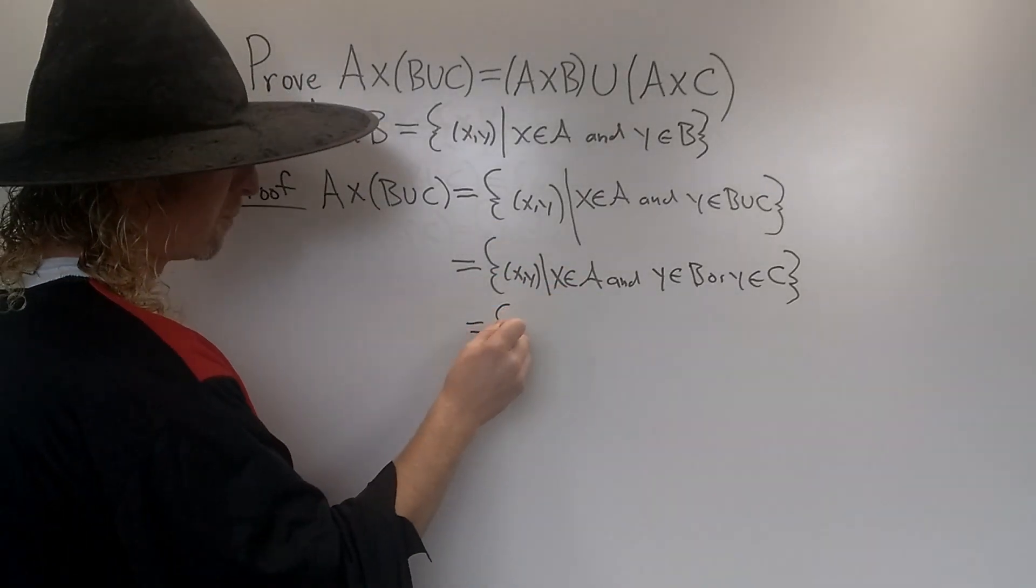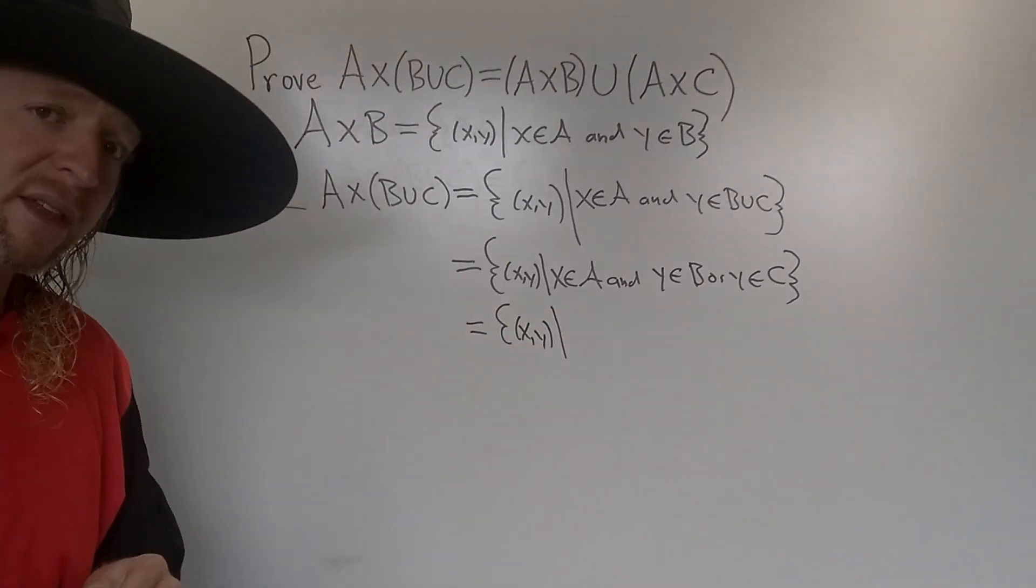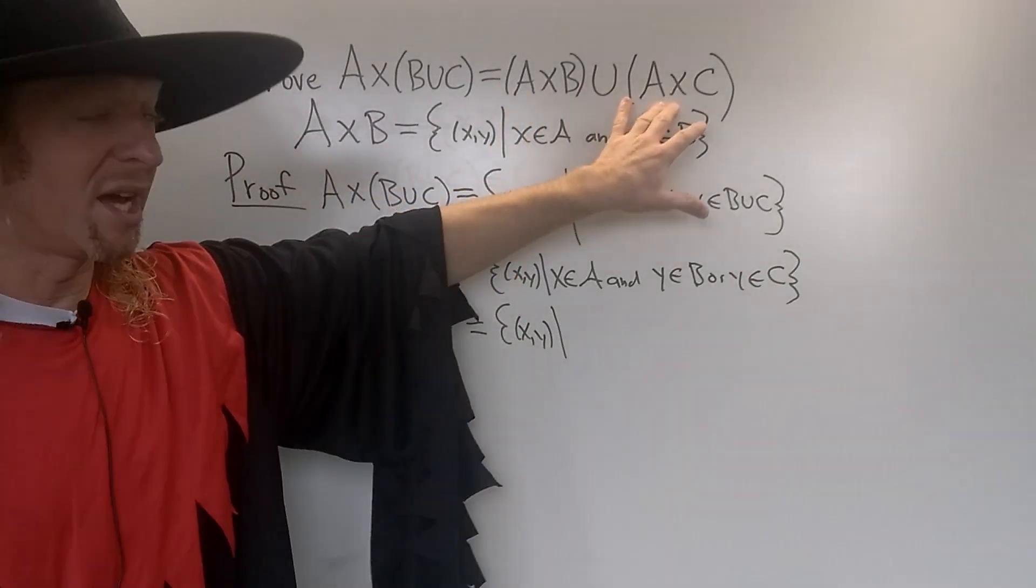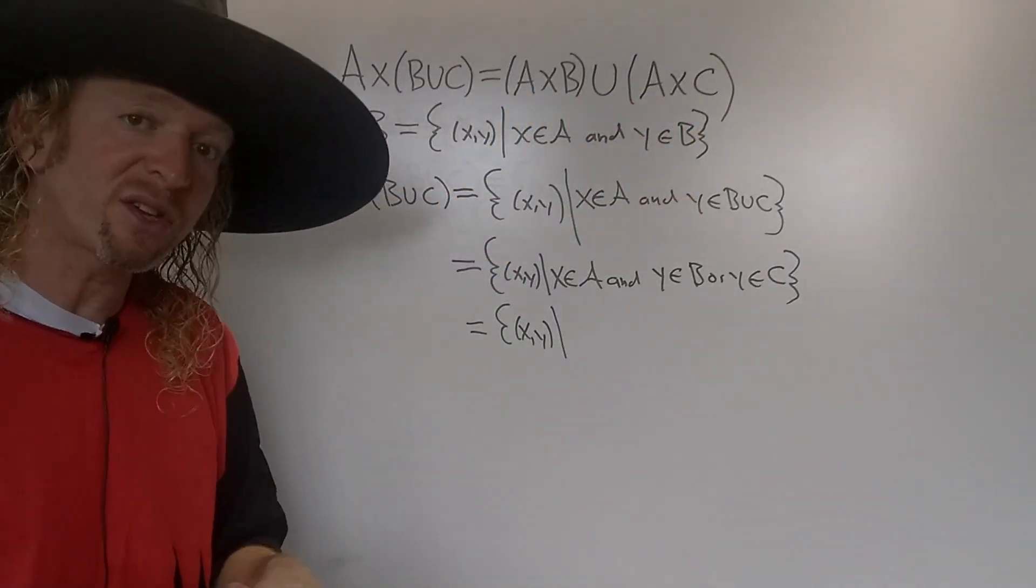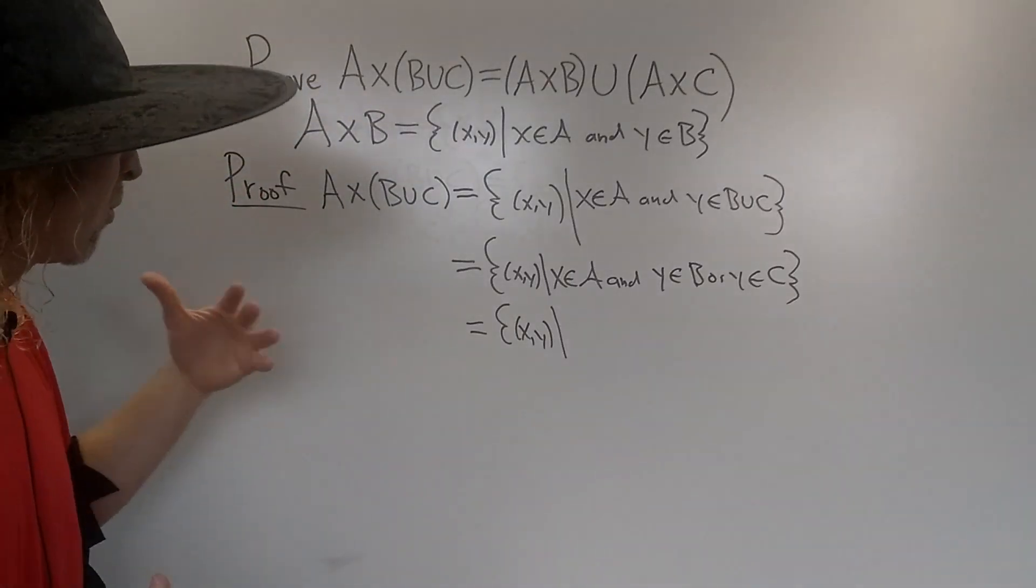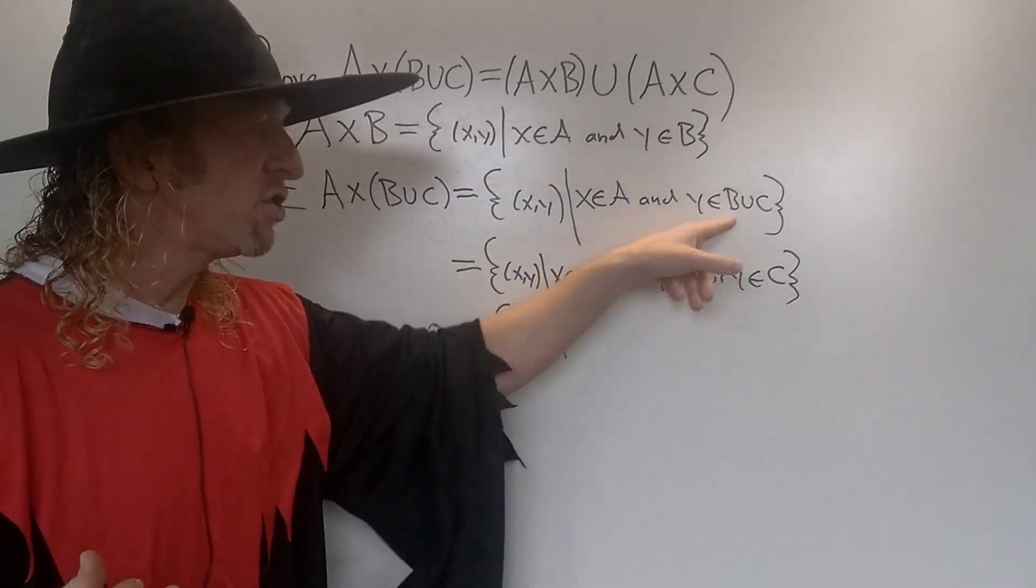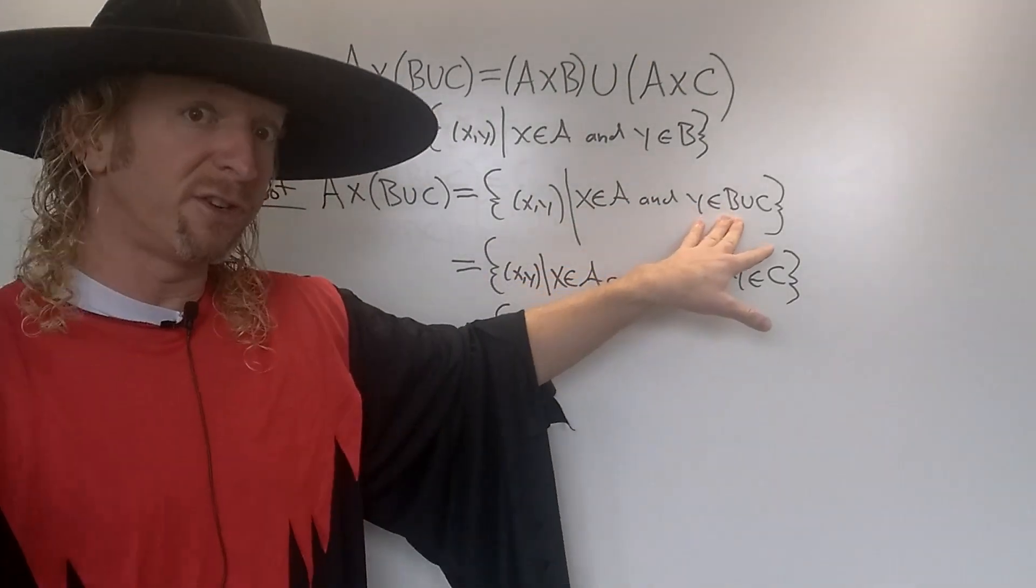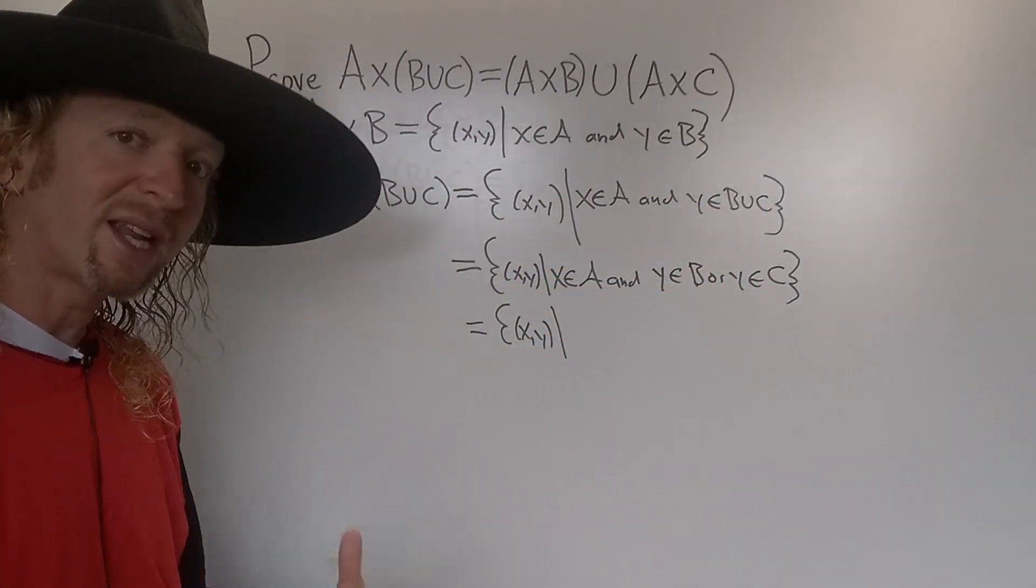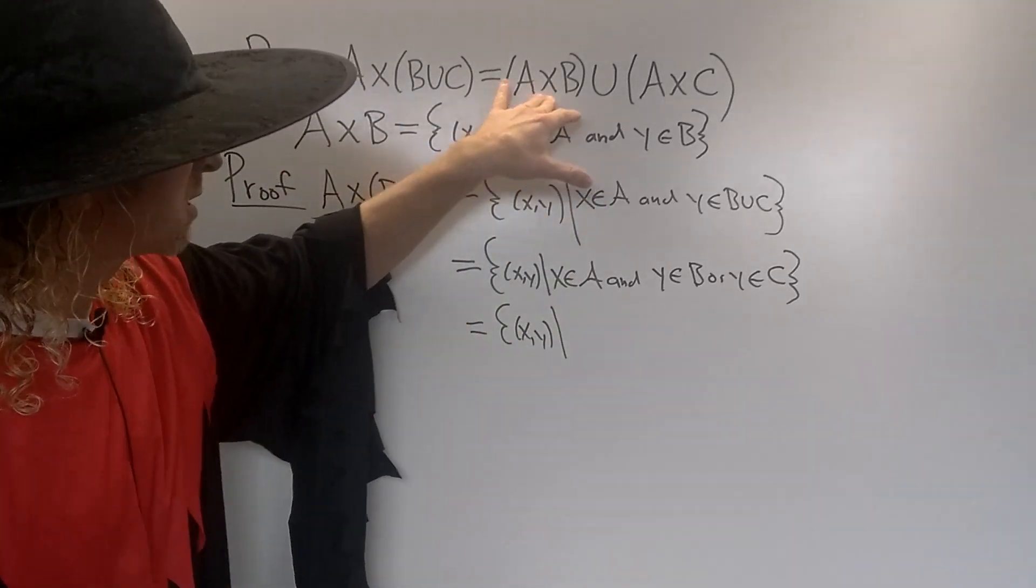Alright, now here is the key step. This is all of the ordered pairs (x,y). So now we need to think about how can we write this in a way that involves A×B and A×C. Because we've already exhausted what we have, right? It's kind of like a one-way proof. What I mean by a one-way proof is you write down what you have, you write down the definition, and then right here there's nothing else you can do except use the definition of union. So this means that y∈B or y∈C. And so now you're kind of stuck. So you have to think about where you're going.